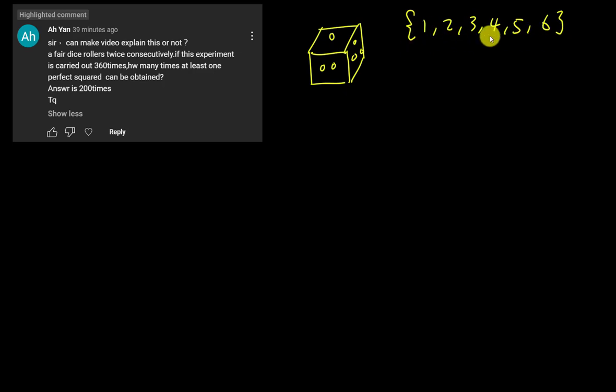So from this sample space, how many perfect square numbers do we have? If you have no idea what is a perfect square number, it means those numbers after square root, you will still get the integer. Example, 1 is a perfect square. Okay, I use S to represent the perfect square number. So my S over here, I know 1 is a perfect square number because you square root 1, you still get integer, positive 1.